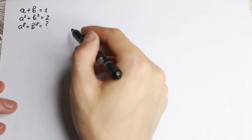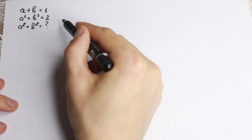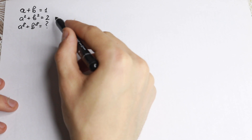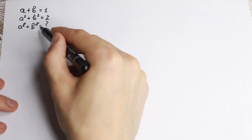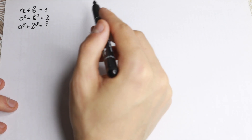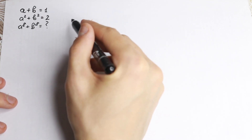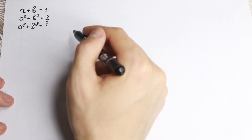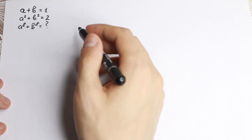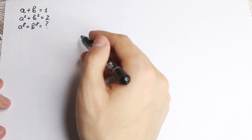A lot of students make this mistake: they say it looks like a plus b is the first power equal to 1, a squared plus b squared equal to 2, so the pattern gives 8 on the right, meaning a to the 8th plus b to the 8th equals 8. But this is absolutely incorrect, and in this video I'm going to show you a really good approach to solve it.